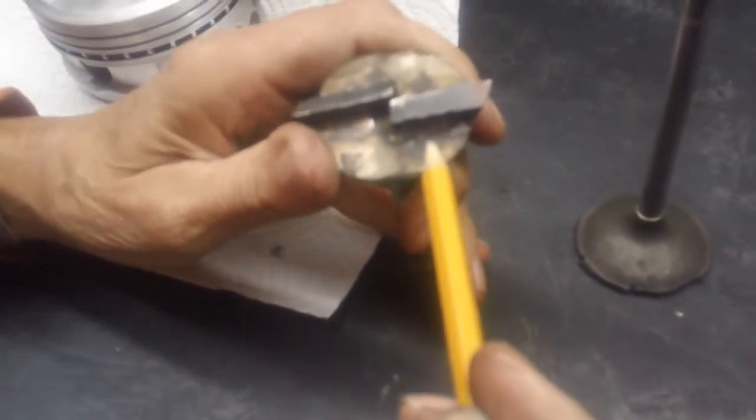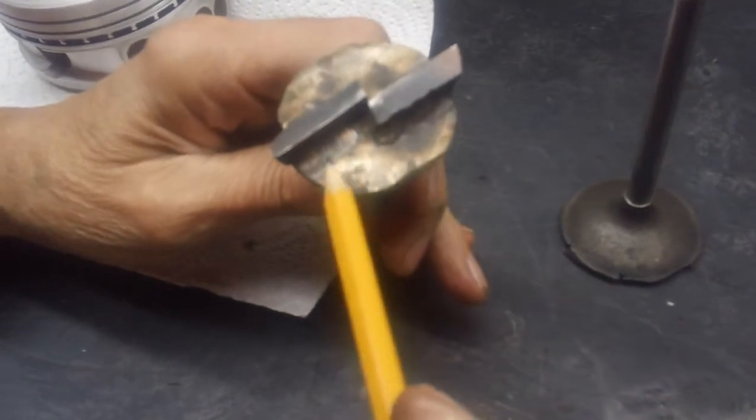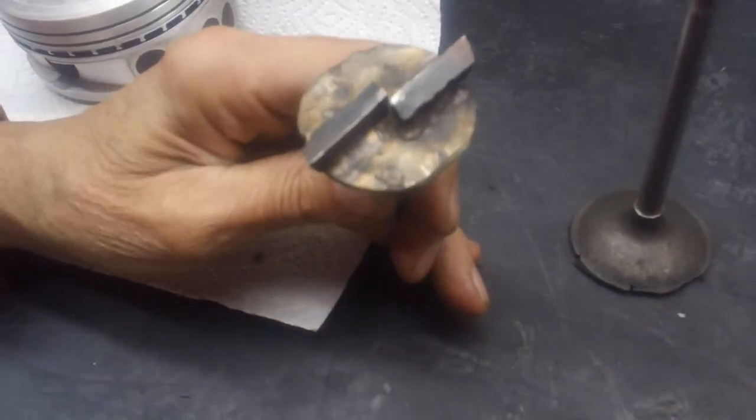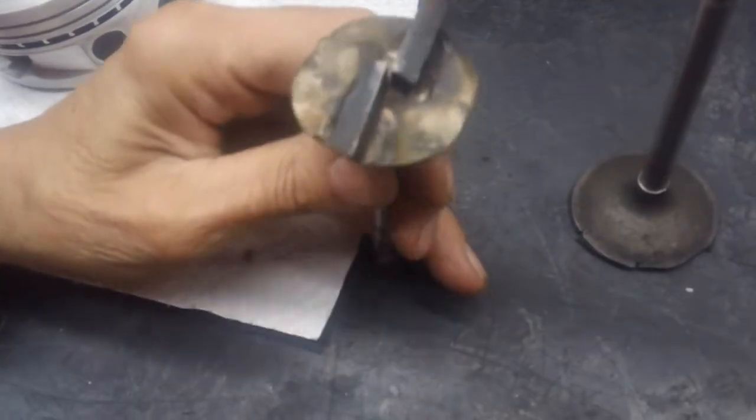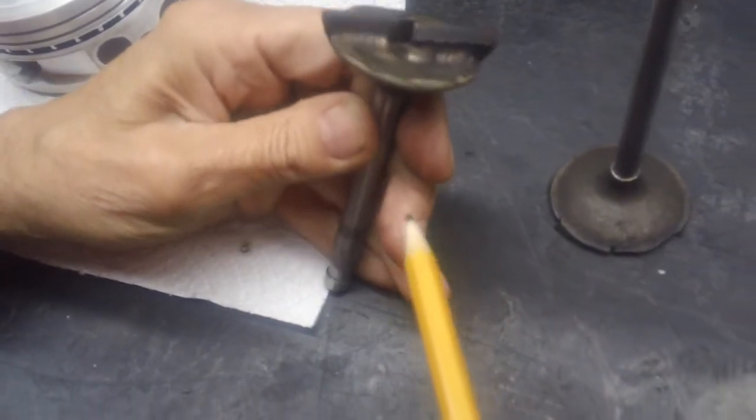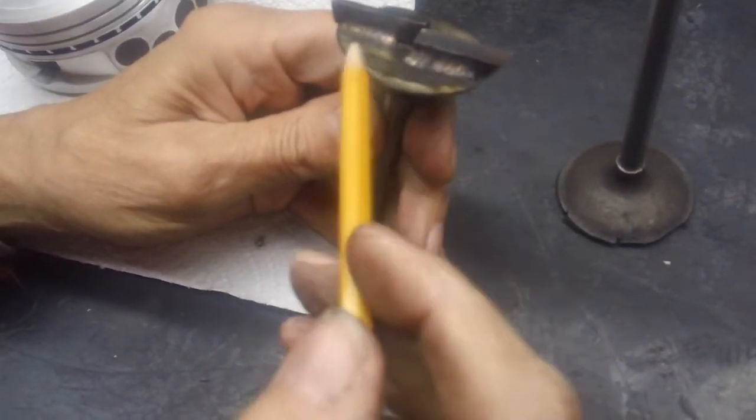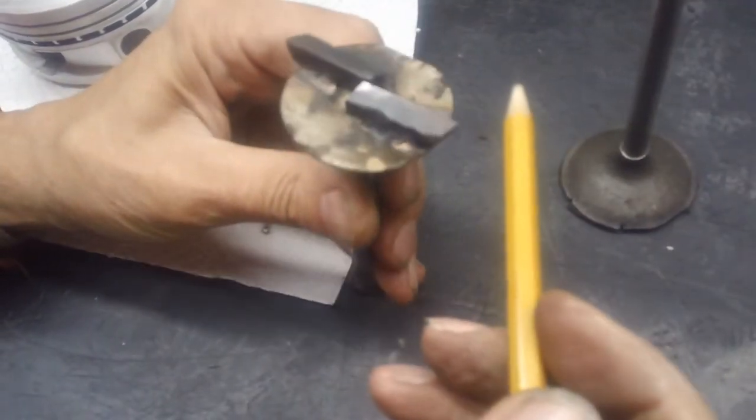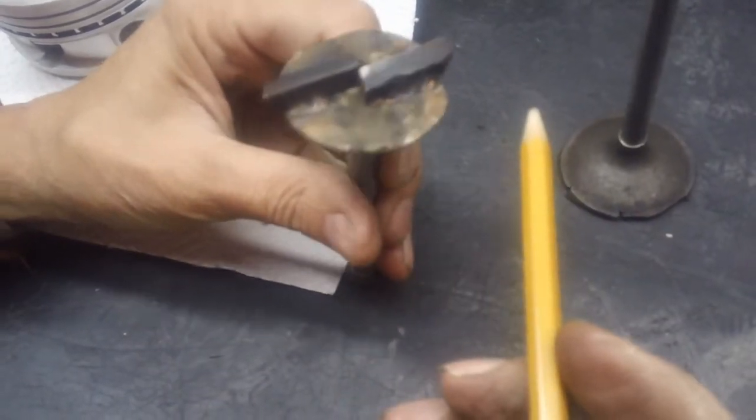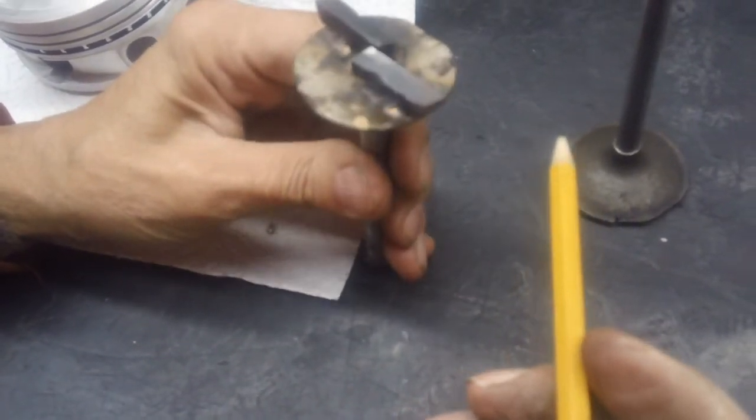And you can weld a piece of lathe tooling on it. Doesn't have to look pretty. It's just got to work. This has got positive rake. It's been hand-ground. Looks a little crude. Works really nice.